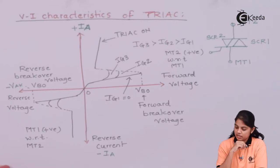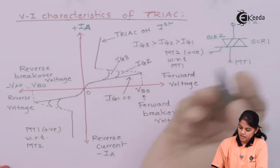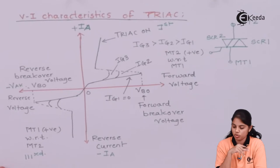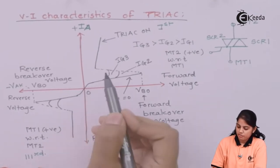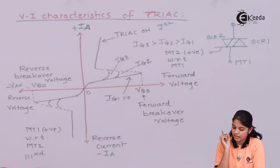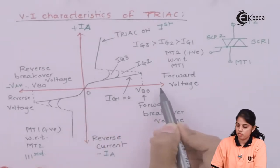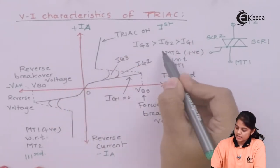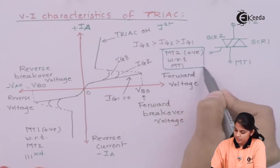Let's study the first quadrant. This is the first quadrant and the third quadrant — the TRIAC operates in these two quadrants. In the first quadrant, if you look at the graph, it looks similar to the VI characteristics of an SCR: as you go on increasing the forward voltage VAK, the behavior follows a familiar pattern.